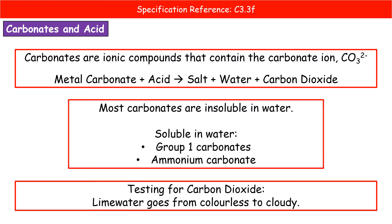The second type of reaction we need to know is carbonates and acids. Carbonates are ionic compounds containing the carbonate ion CO₃²⁻. The general word equation is: metal carbonate plus acid makes salt plus water plus carbon dioxide. We work out the name of the salt as before, then write plus water plus carbon dioxide. Don't forget the carbon dioxide — if we have a carbonate ion, the carbon has to go somewhere.